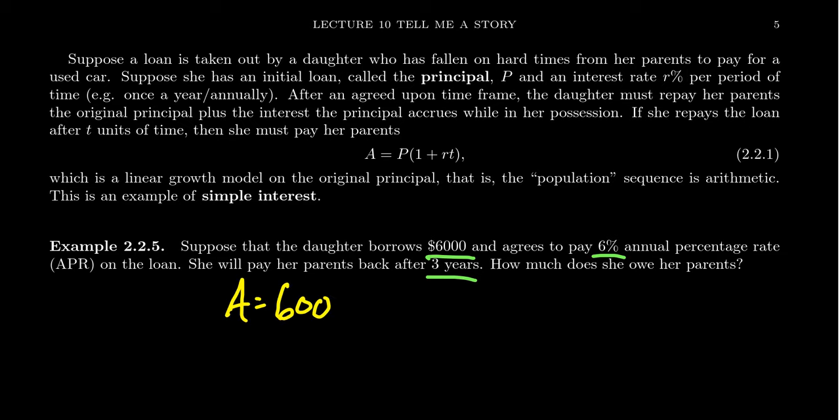In that situation, using the simple interest formula from above, the amount will equal the principal, which is 6,000, times one plus the interest rate, which is 0.06. Make sure you write your R actually as a decimal, not with the percentage symbol. Then she pays it back after three years. This percentage rate is percentage per year, so there's no conversion of time we have to worry about.